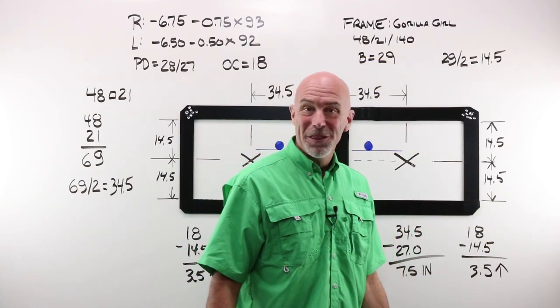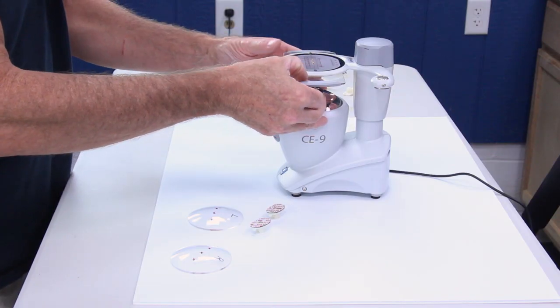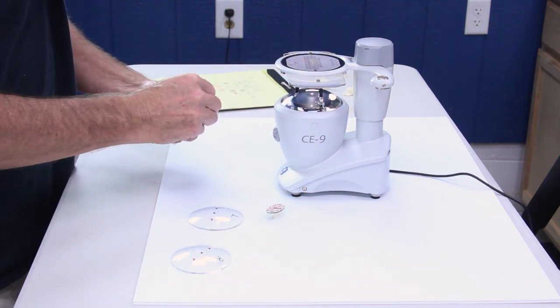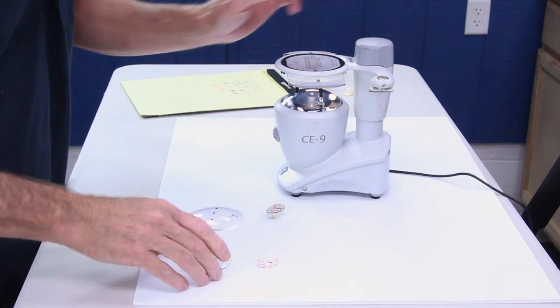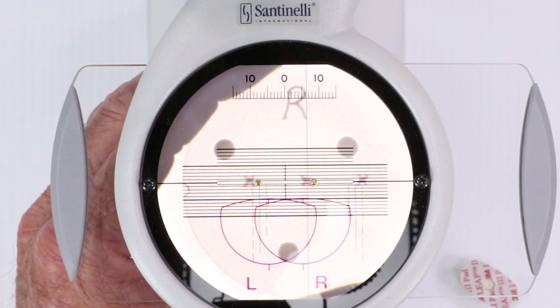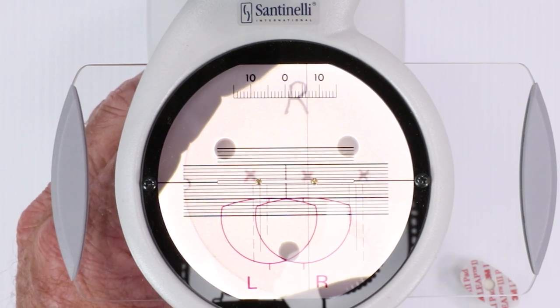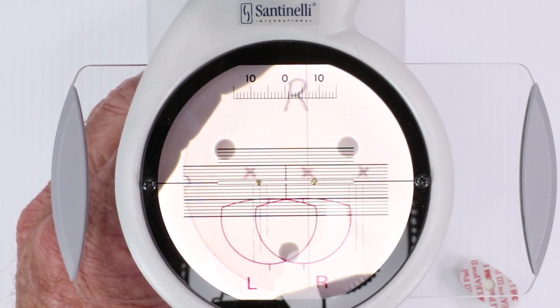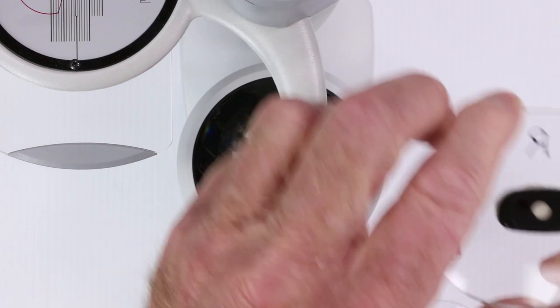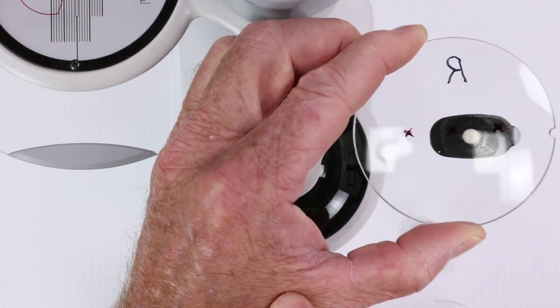Example number three says that I have got six and a half, which is quite a bit, six and a half over and three and a half up. Six and a half over and three and a half up. One, two, three and a half. Six over and up. Looks good.